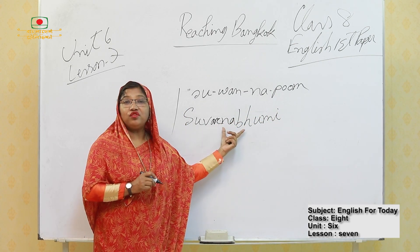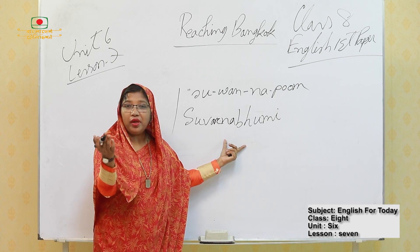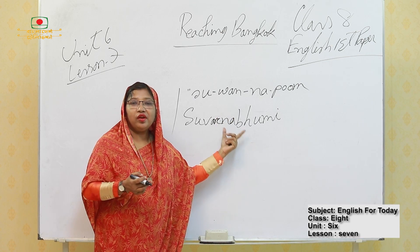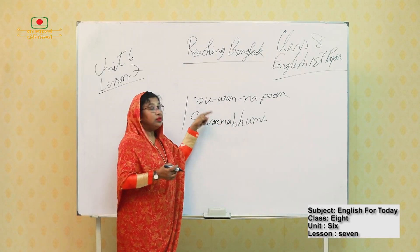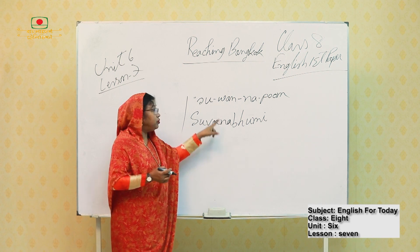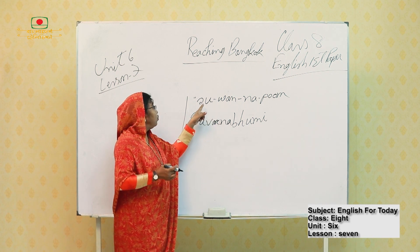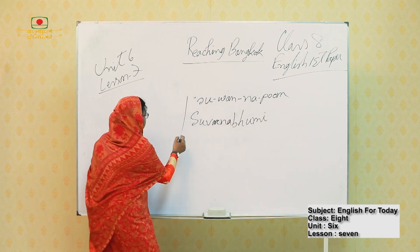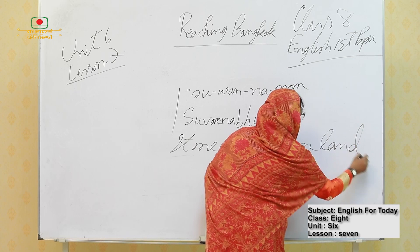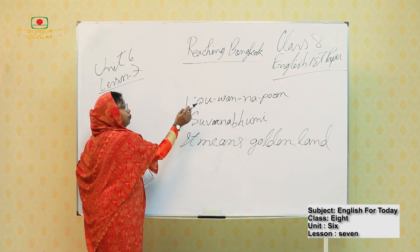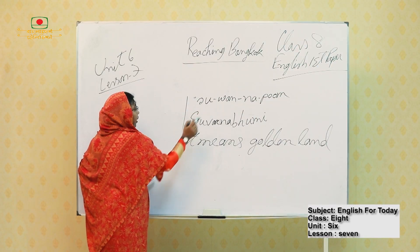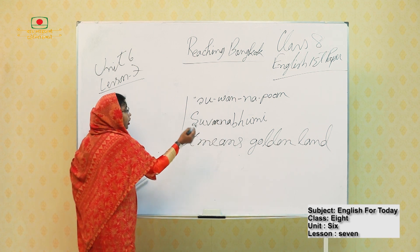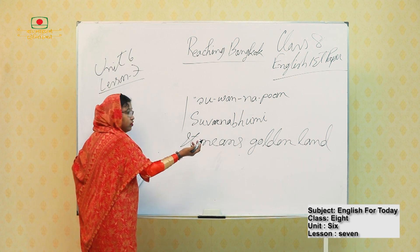What is Suvarnabhumi? Answer me. The international airport of Thailand — and it is derived from the Sanskrit word Suwannaphum. It means 'golden land'. Suwannaphum, Suvarnabhumi — it means golden land in Sanskrit.